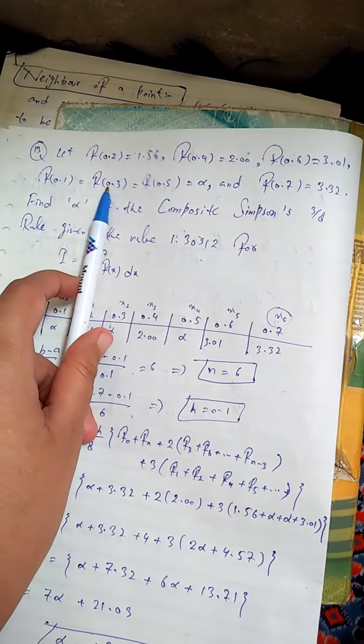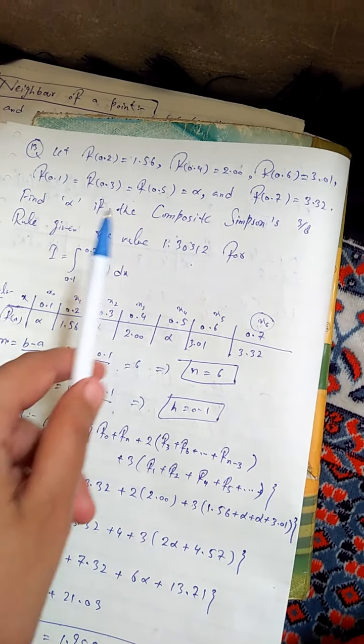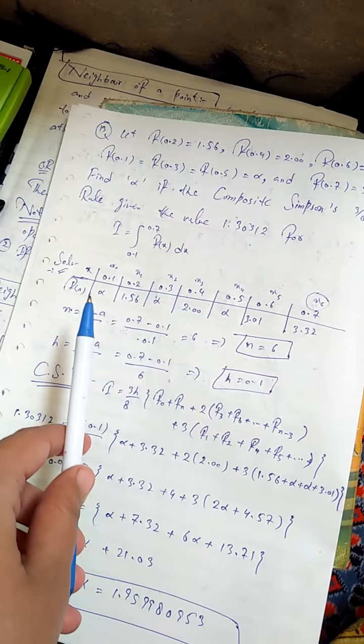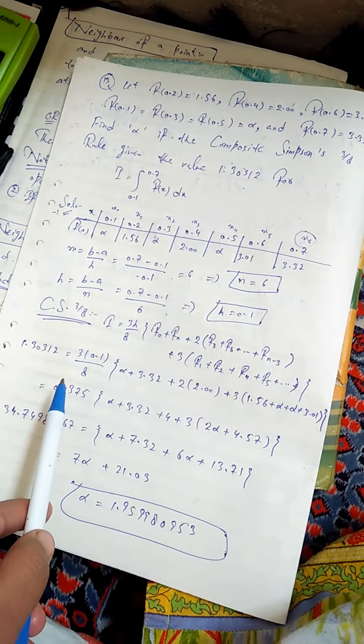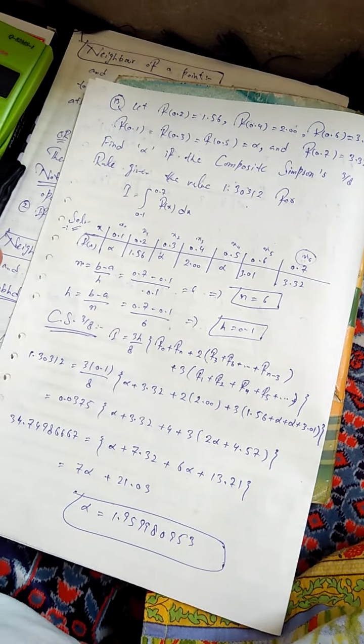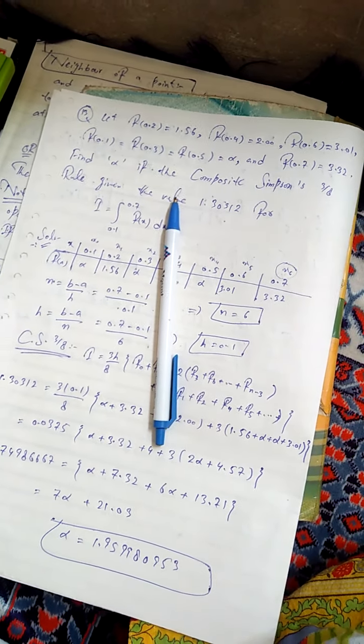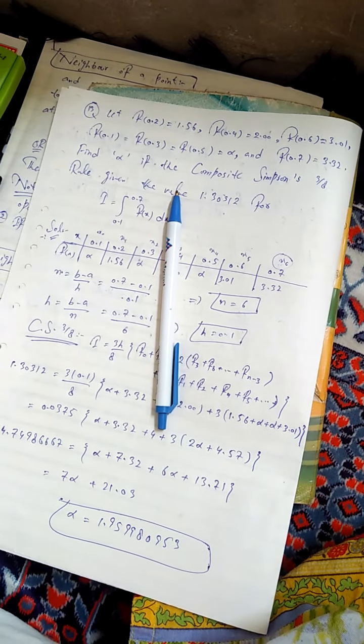The next question is that we have all given. You can use the Simpson's 3 by 8. I have a table with N and H. I have to put it here, simplify it, alpha from the answer. So in this way you can solve all these questions. If you have a problem, please tell me. If you have a problem, please give me a thumbs up. Allah Hafiz.